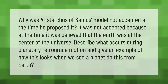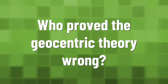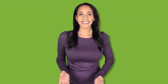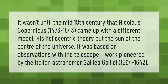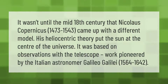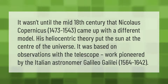Nicolaus Copernicus (1473–1543) came up with a different model. His heliocentric theory put the sun at the center of the universe. It was based on observations with the telescope, work pioneered by the Italian astronomer Galileo Galilei (1564–1642).